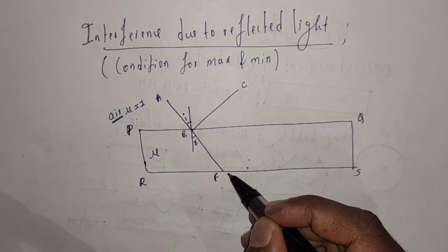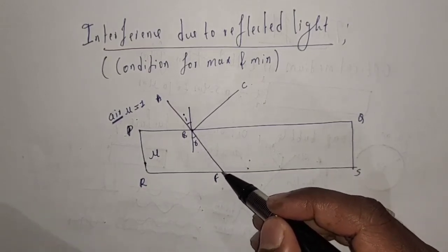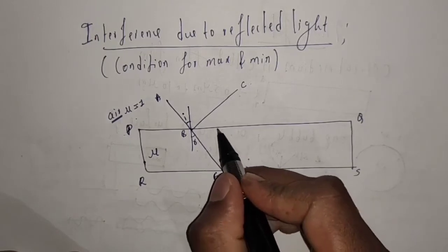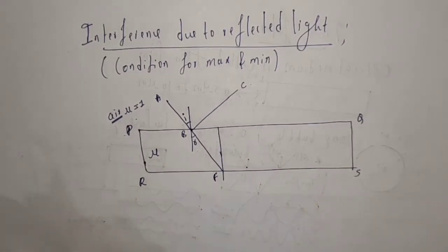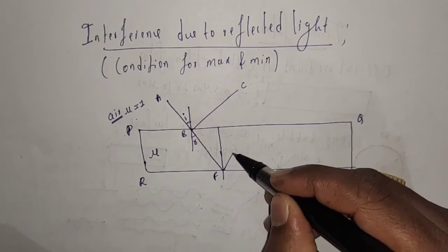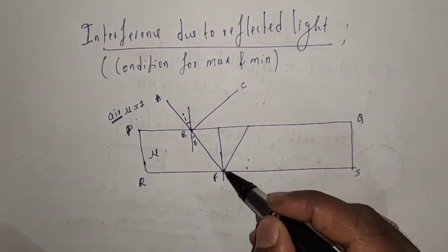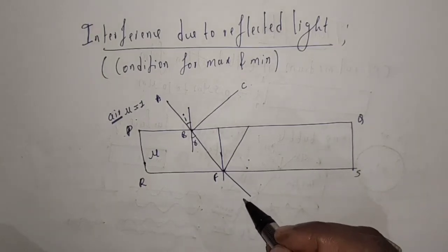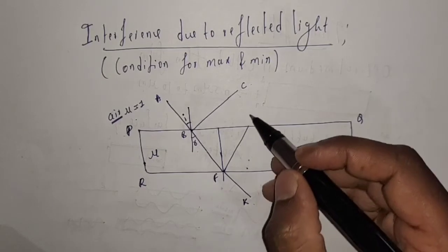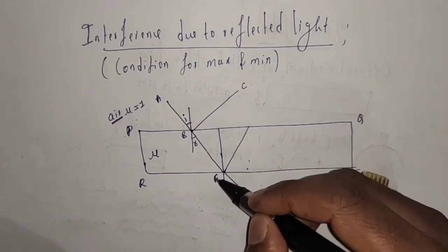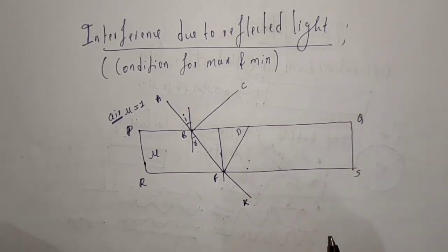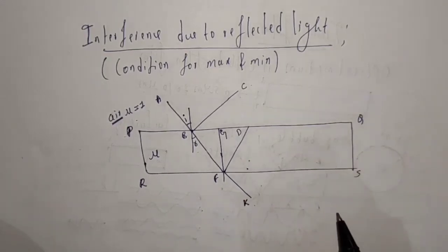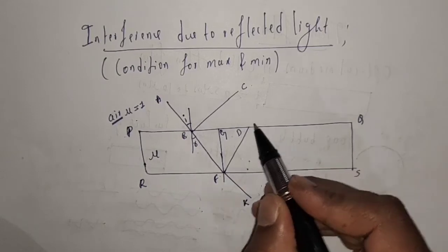BC is the reflected light wave and BF is the refracted light wave. When BF is incident on the bottom face of the thin film, I am going to draw a normal here. Some part of the light gets reflected and some part gets transmitted. The transmitted light is denoted by FK and the reflected light by FD.